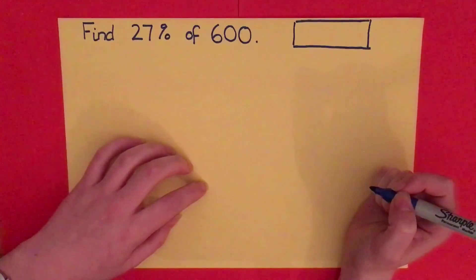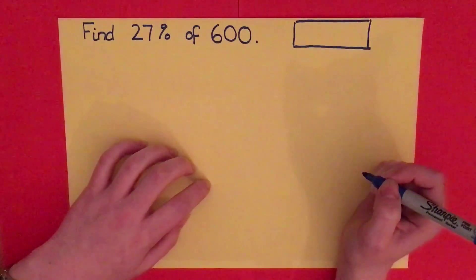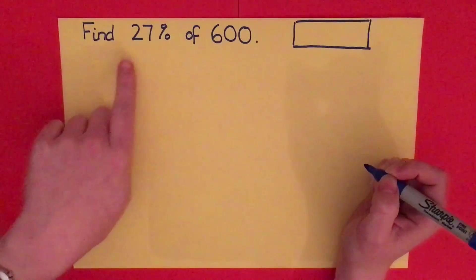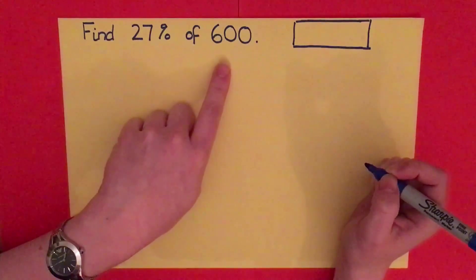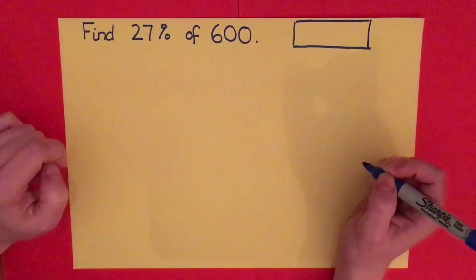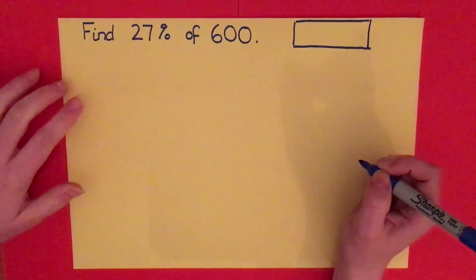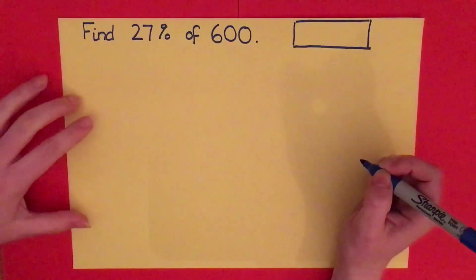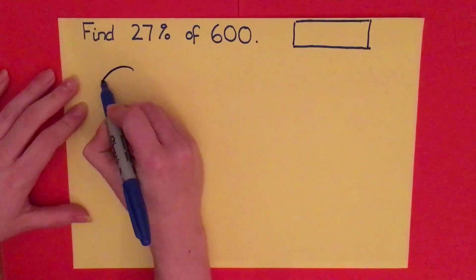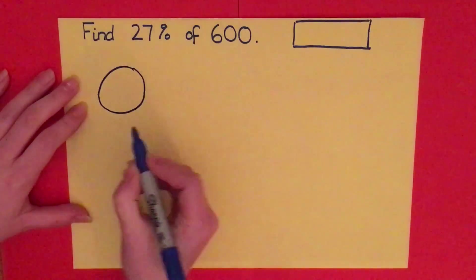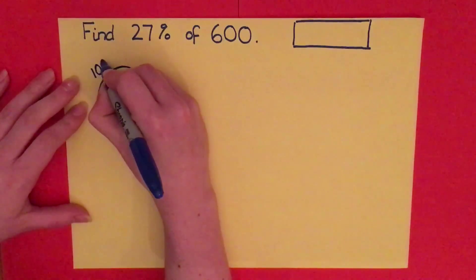Today we are going to be looking at finding percentages of a number. The question is: find 27% of 600. I'm going to use the bubble method, which is what I've been using with my class the last few weeks. We always start off with a bubble in the top left-hand corner.